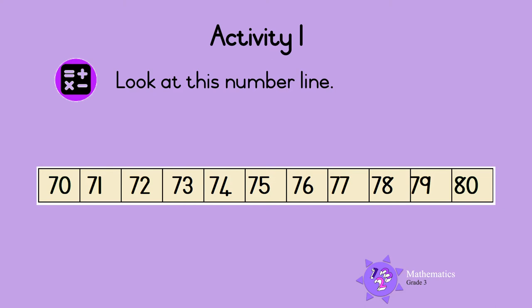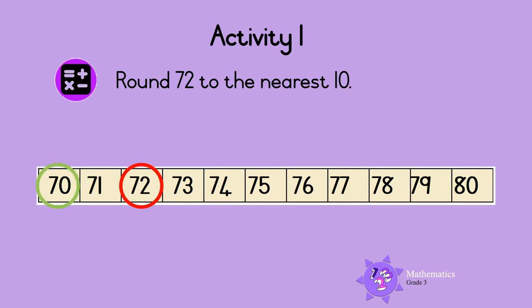Activity 1. Look at this number line. It starts at 70 and ends at 80. Round 72 to the nearest 10. Here is 72 on the number line. 72 can be rounded to 70 or to 80. Which 10 is closer to 72? Is it 70 or 80? 70 is closer to 72, so 72 rounded down to the nearest 10 is 70.